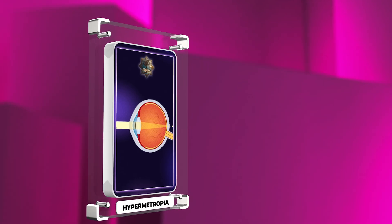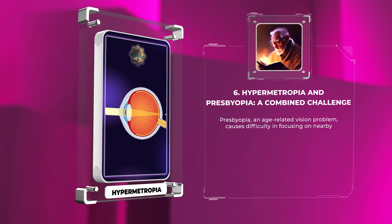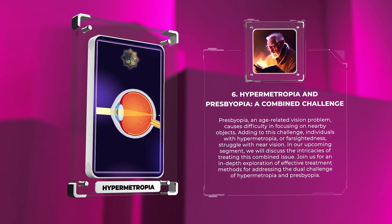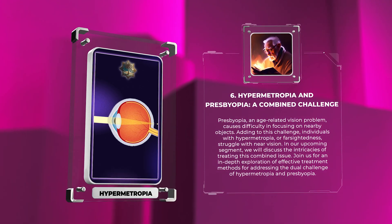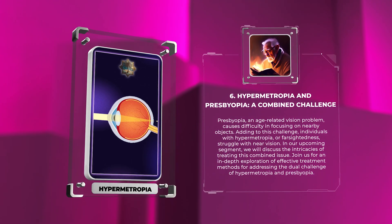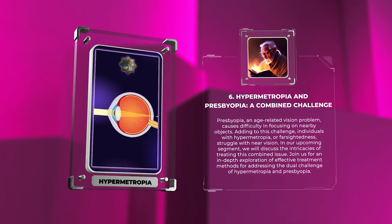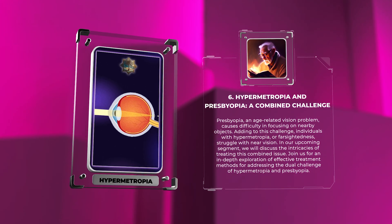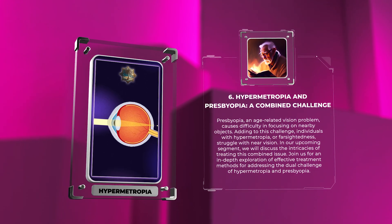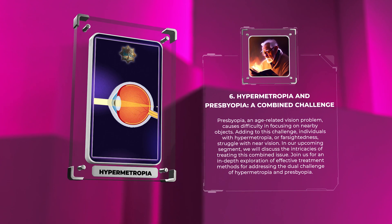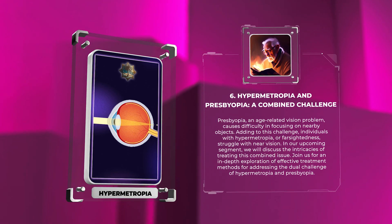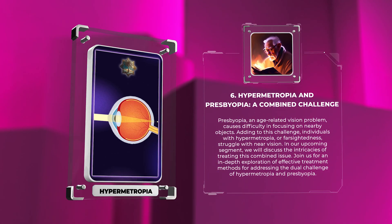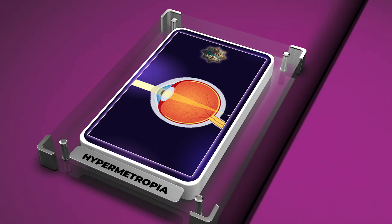Presbyopia, an age-related vision problem, causes difficulty in focusing on nearby objects. Individuals with hypermetropia, or farsightedness, also struggle with near vision. In our upcoming segment, we will discuss the intricacies of treating this combined issue, with an in-depth exploration of effective treatment methods for addressing the dual challenge of hypermetropia and presbyopia.